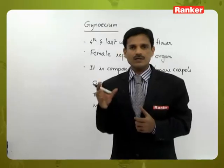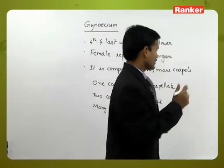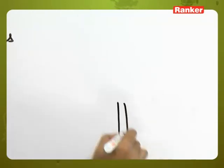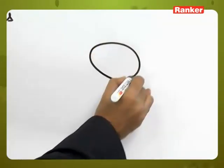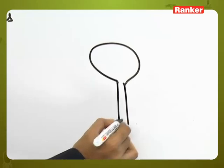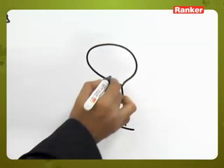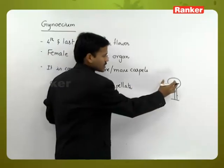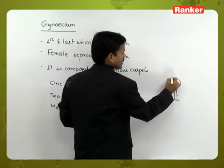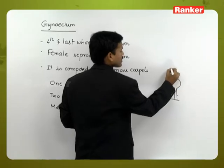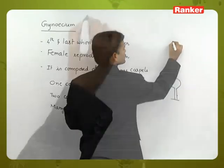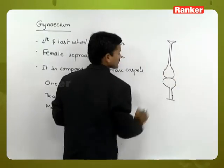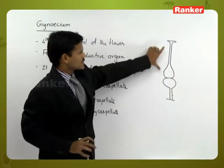In the flower, the last whorl is Gynoecium. Gynoecium is present on the Thalamus. The stalk is the Pedicel, and the swollen body at the top is called the Thalamus. The innermost whorl on the Thalamus is called Gynoecium. This body is Gynoecium.